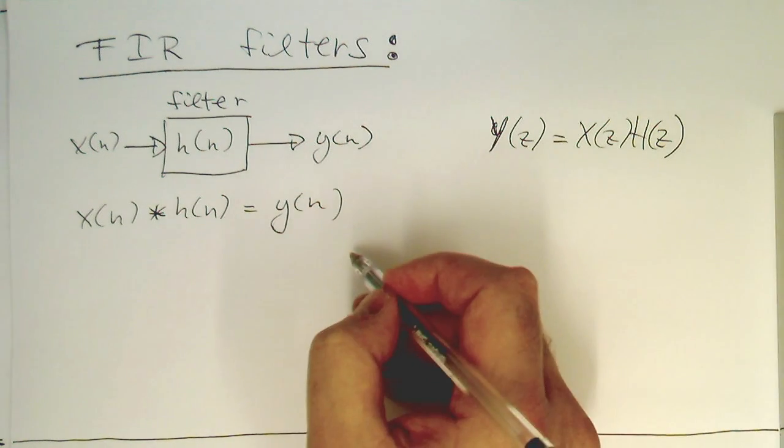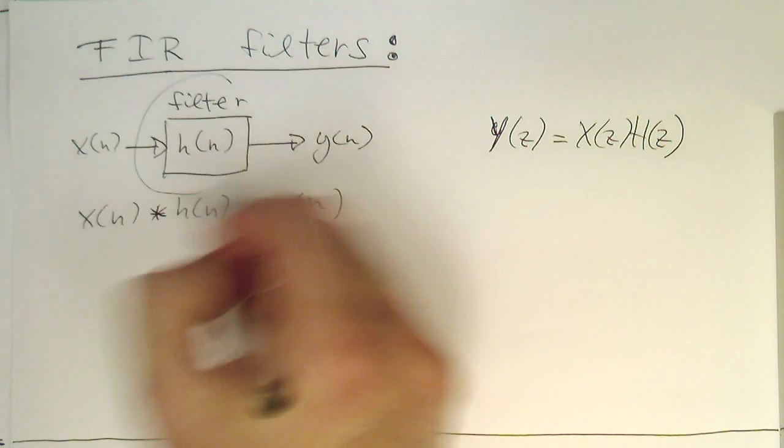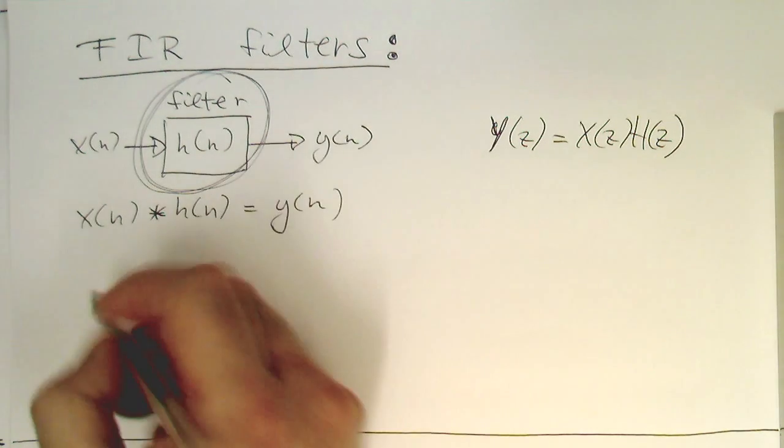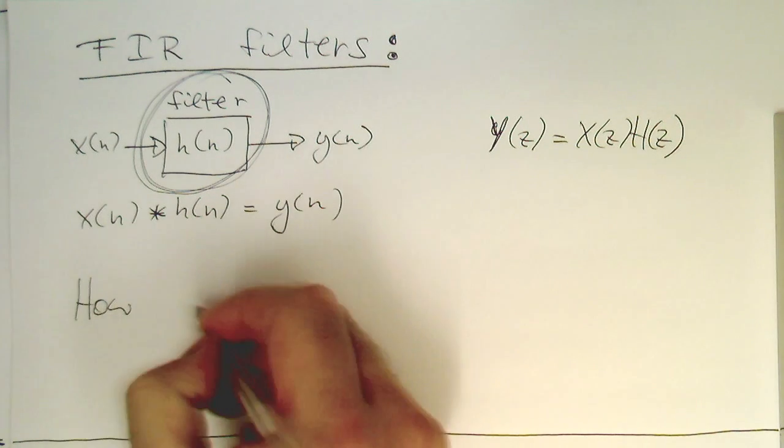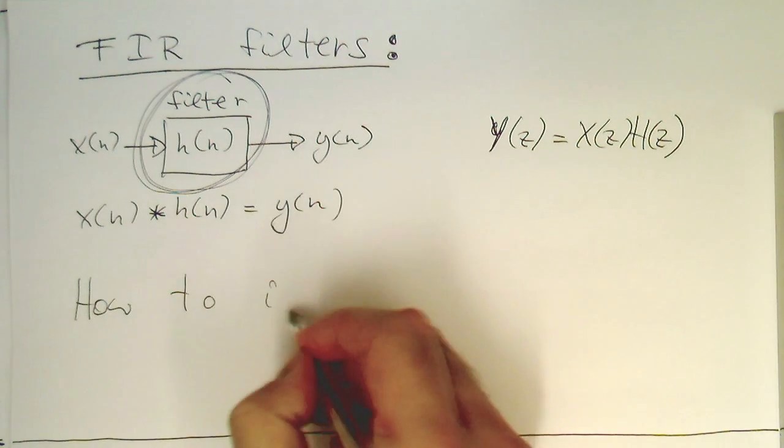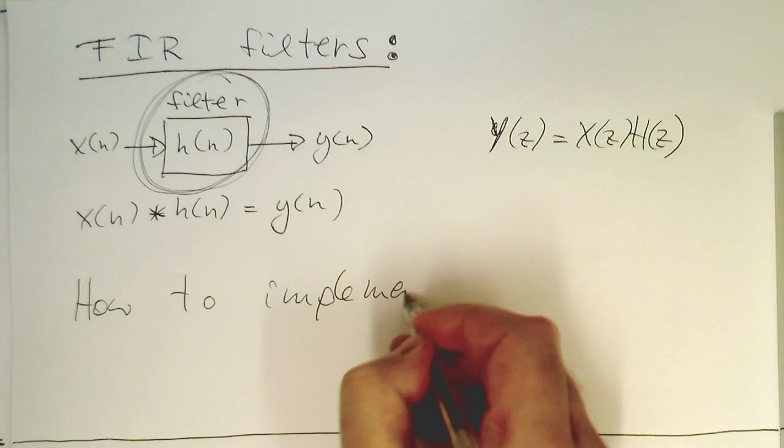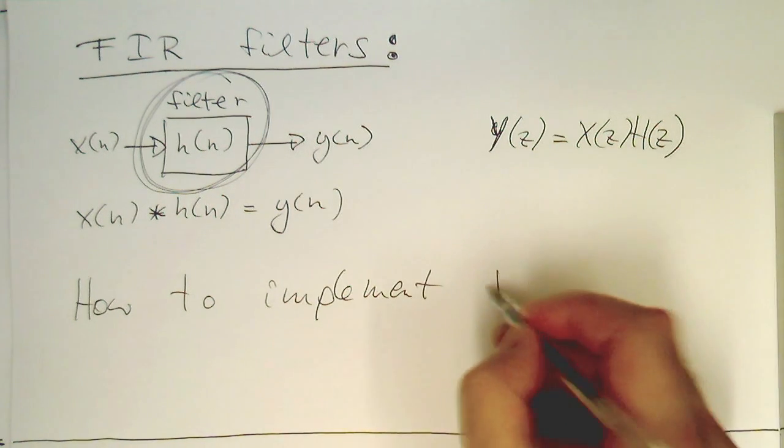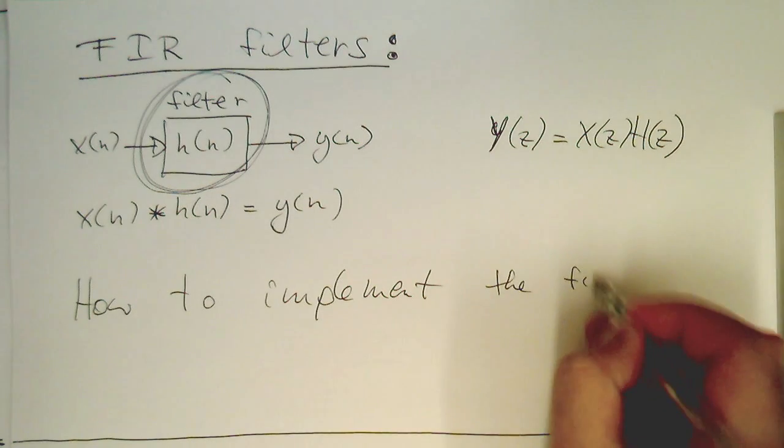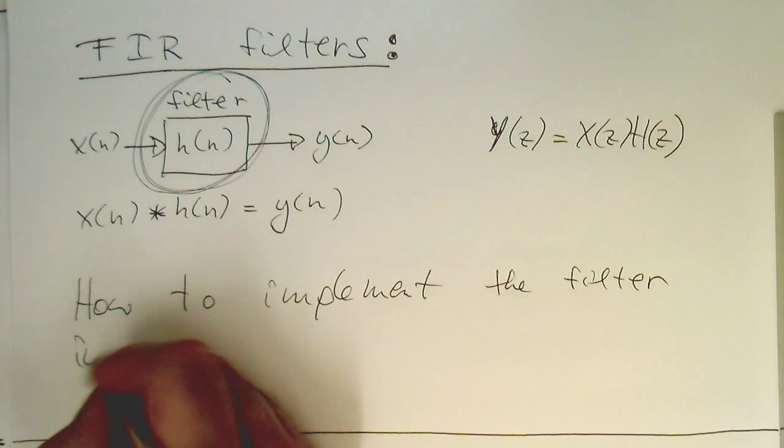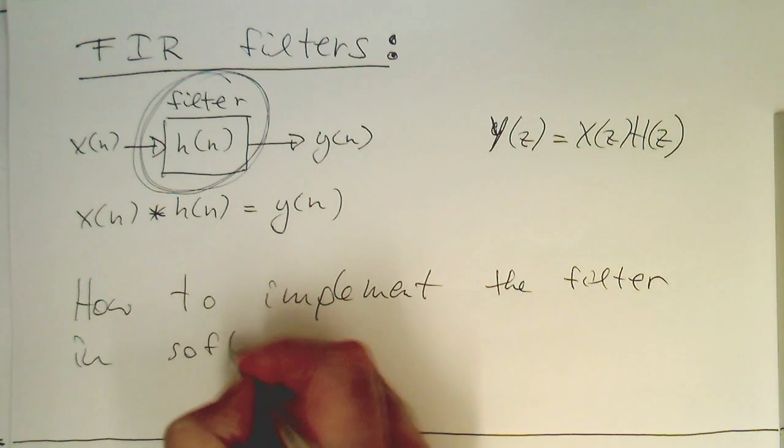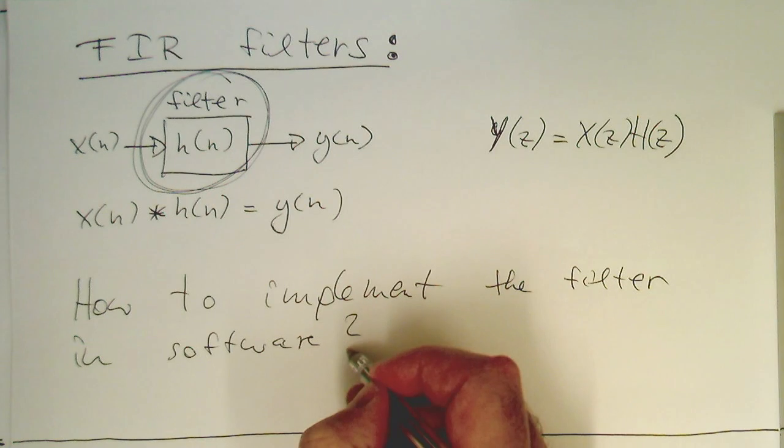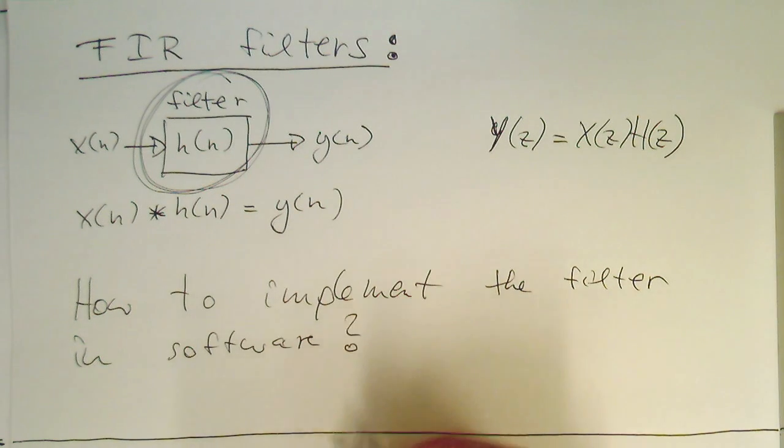So now, how can we implement this filter here, this digital filter? How can we create a physical implementation of this? How to implement the filter in software, in proper code?